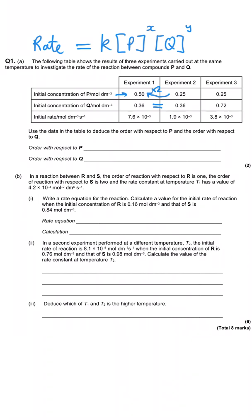When we compare those two rates of reaction, they're not the same — and that tells us the order with respect to P is definitely not zero order. We can rule that out because if it were zero order, the rate would not have changed even though we changed the concentration of P. So our two remaining options for A-level chemistry are first order or second order.